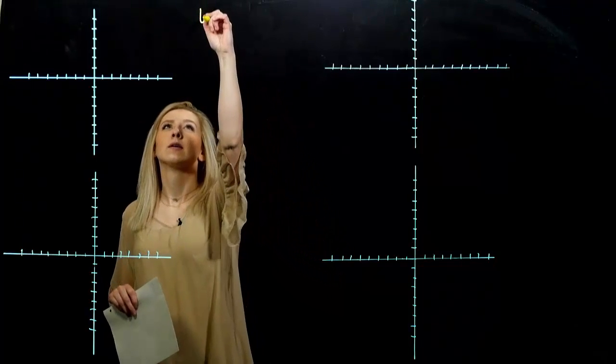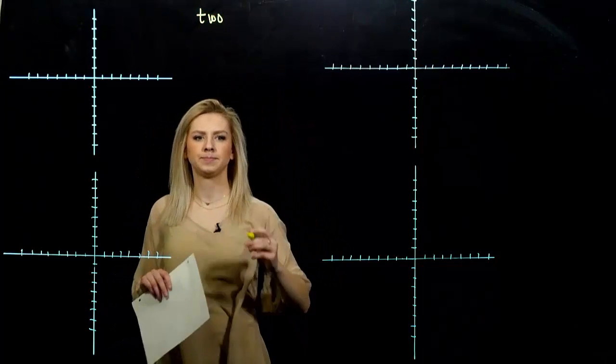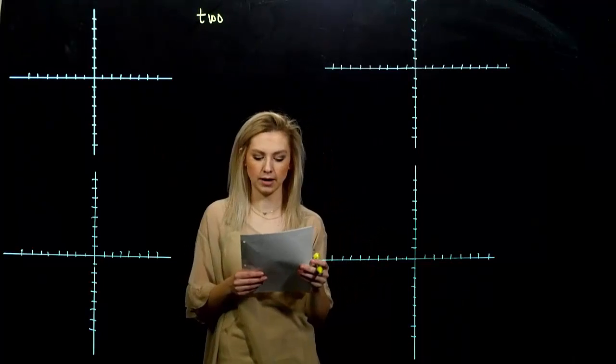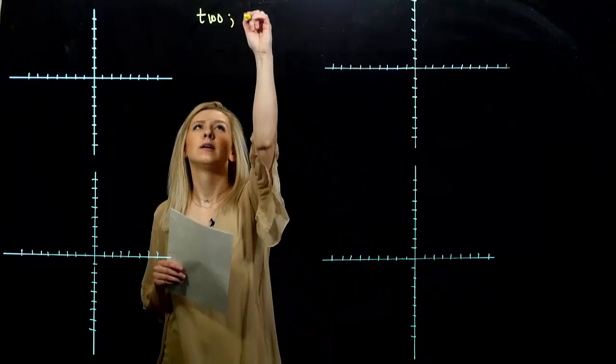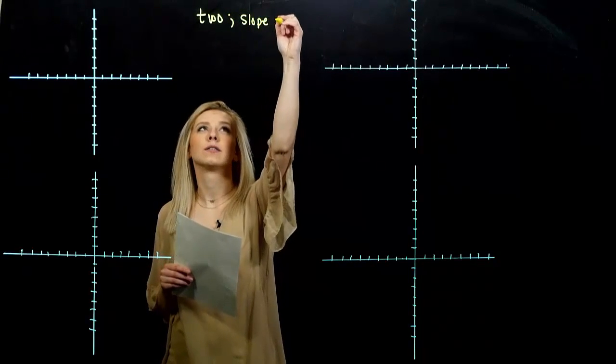We can graph a line if we know the coordinates of two points. We've seen that - two points on the line.